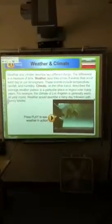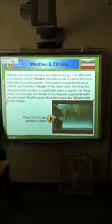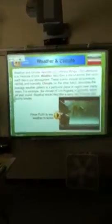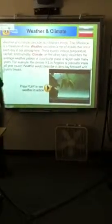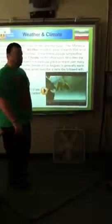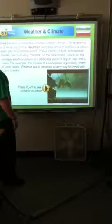Weather and climate describe two different things. The difference is a measure of time. Weather describes a mix of events that occur each day. Climate is more of an average of the things that happen throughout the years. Would this be climate or weather? Weather. Weather. Weather. Good. I wish it was raining out there right now. I don't like rain. I wish it was snowing. No snow. The Earth's axis tilts.